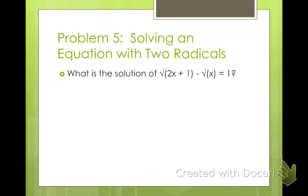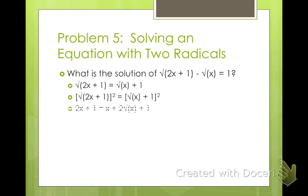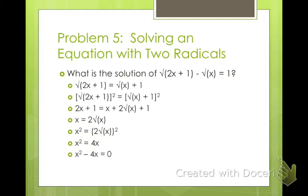If we have two radicals, the goal is to get each radical by itself on different sides of the equation. We add the square root of x to one side, then square both sides — remember, we have to FOIL. We get the square root of x plus 1 squared, giving 2x plus 1 on one side and x plus 2 times the square root of x plus 1 on the other. Subtract x and subtract 1 to get the 2 times square root of x by itself, then square both sides again to get x squared equals 4x. Subtract 4x and set equal to 0, factor out x: x times x minus 4 equals 0, giving solutions x equals 0 and x equals 4. Both check out.